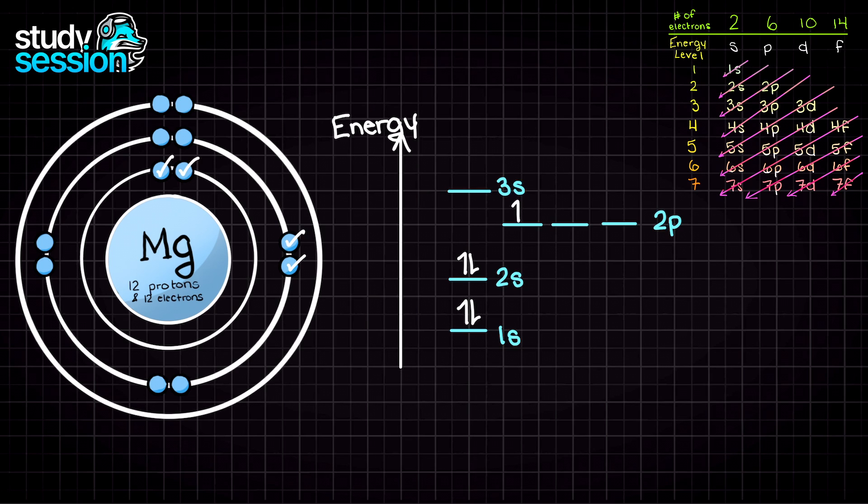Then we are going to move to the 2p orbitals, of which there are 3, and these orbitals can all take 2 electrons. Therefore, in total, we have 6 electrons placed into the 2p orbitals. This leaves us with 2 electrons remaining.